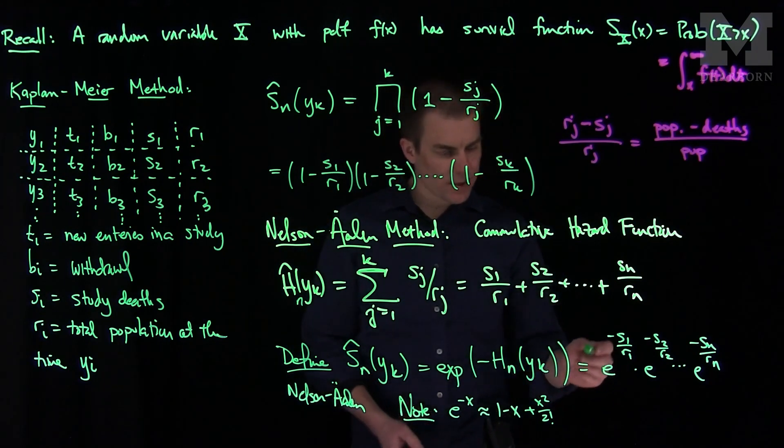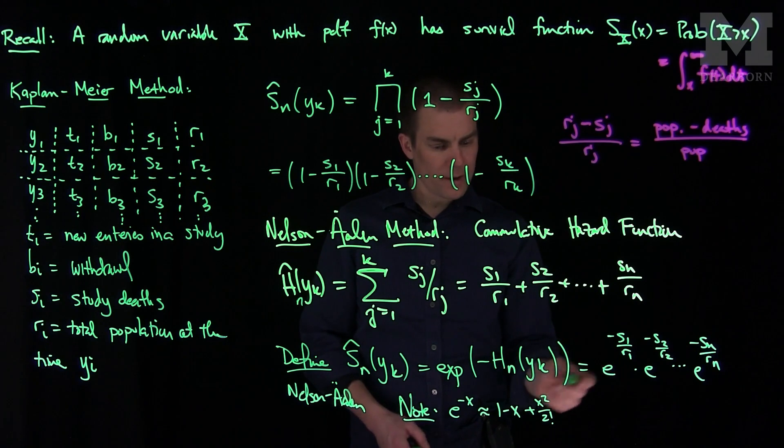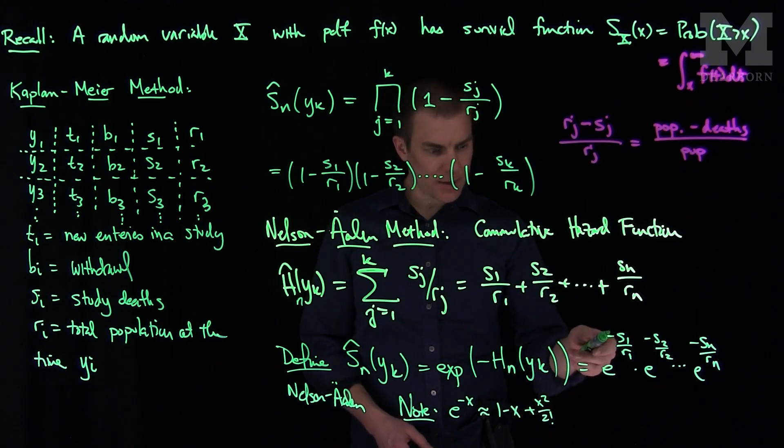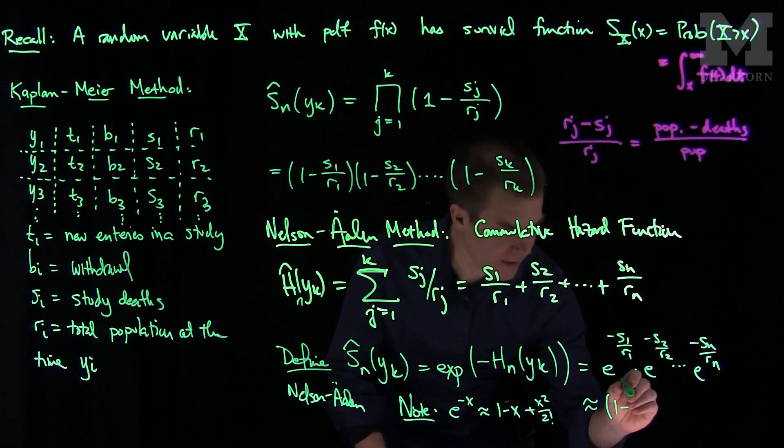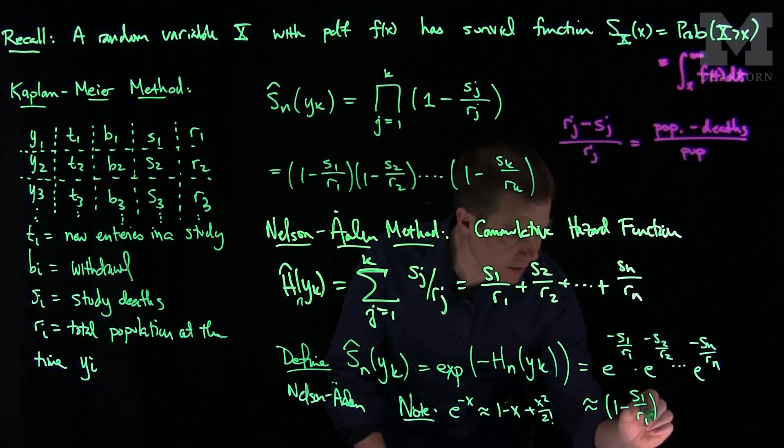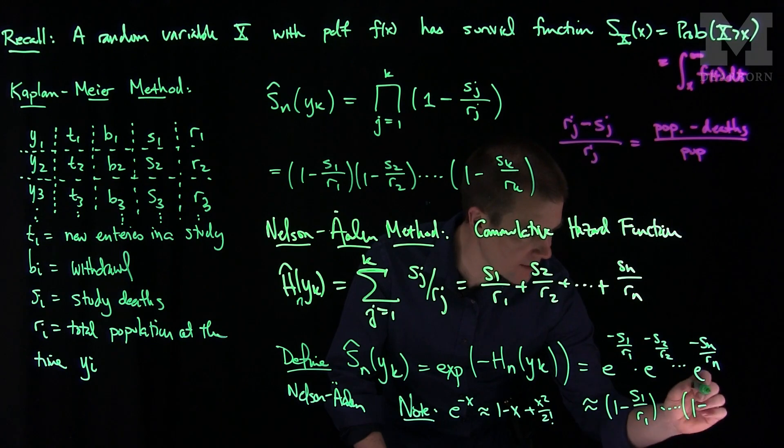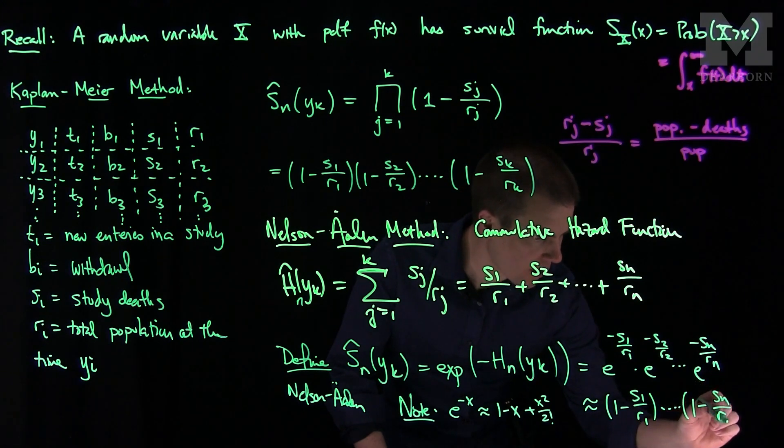So what we have here is we can say that each of these terms is approximately 1 - x. In this case I'll have s1/r1, so this is approximately equal to (1 - s1/r1) × ... × (1 - sn/rn).